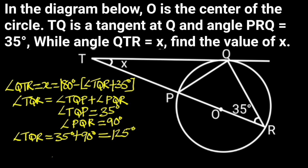Therefore X equals 180 degrees minus 125 degrees plus 35 degrees, which is 20 degrees.